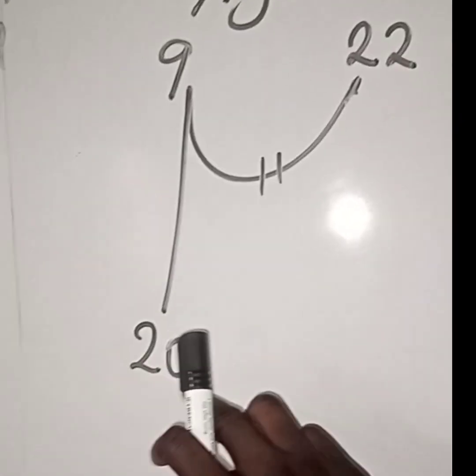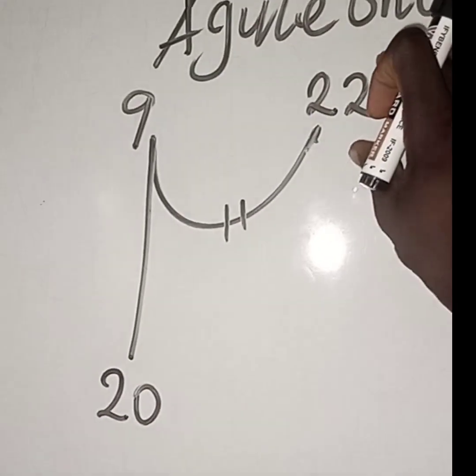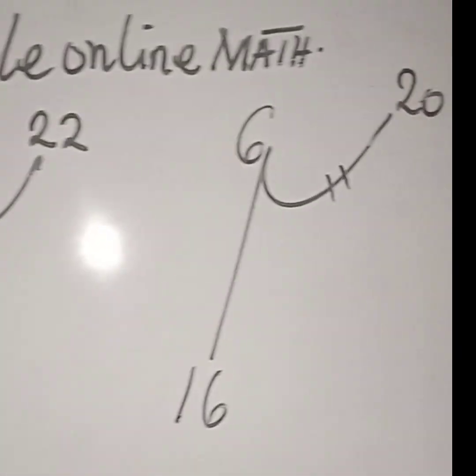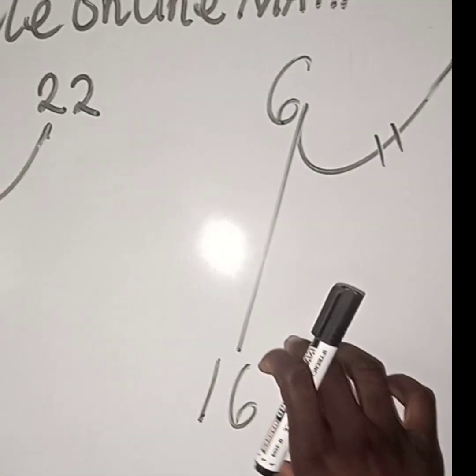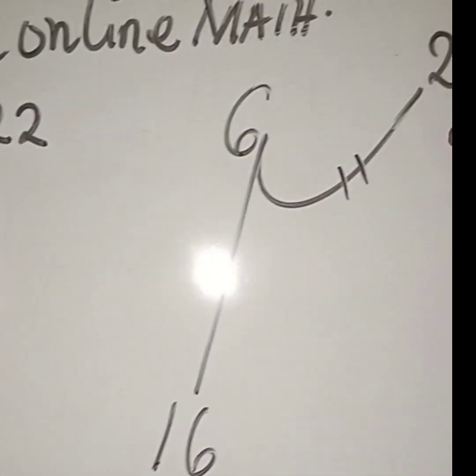So we'll have 20 down, we'll have 9 and we'll have 22. For the other sample, we'll have 16 down, we'll have 6 and we'll have 20.